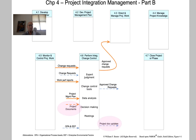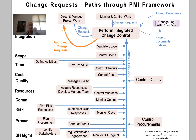Then we see these project documents and project documents updates. What's happening here is all of our change requests get logged. We don't see any explicit information flows to or from the change log — we read from and write to the change log through these rather subtle project documents and project documents updates.